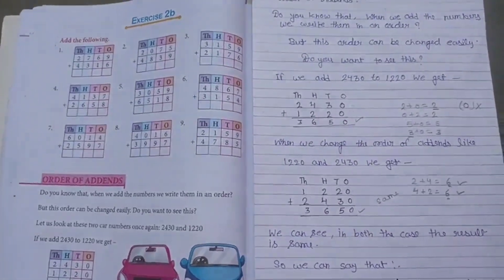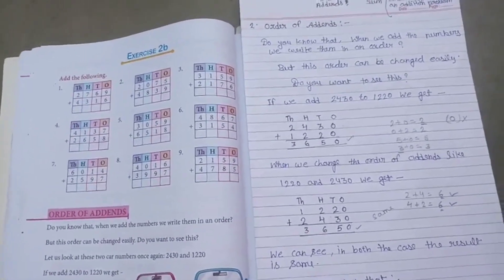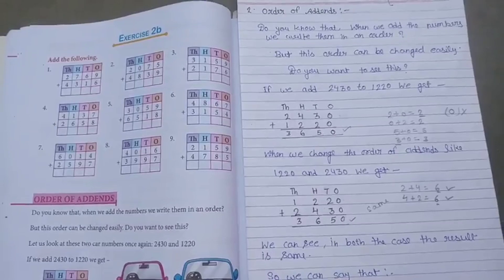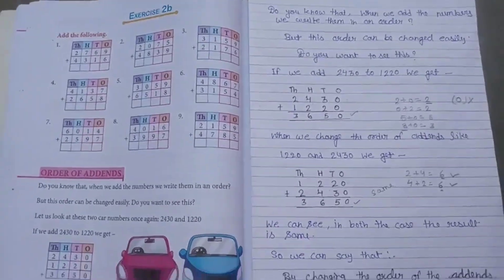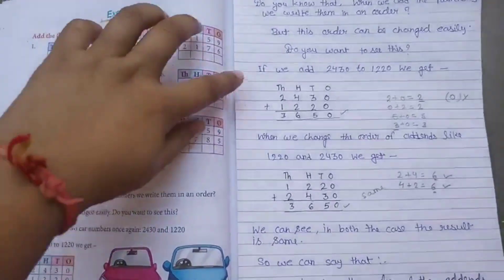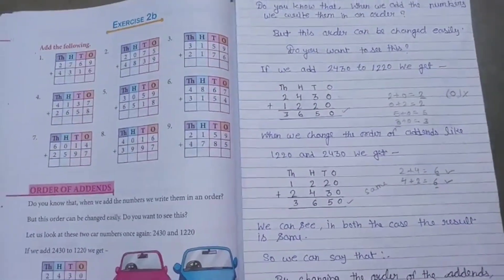We are going to say that if we change the order of numbers and add, the sum will always be the same. We can see in both cases the result is same, so we can say that by changing the order of the addends, the sum does not change.